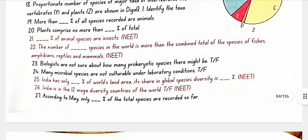More than 70% of all species recorded are animals. Plants comprise no more than 22% of the total. 70% of animal species are insects. The number of fungi species in the world is more than the combined total of species of fishes, amphibians, reptiles, and mammals.